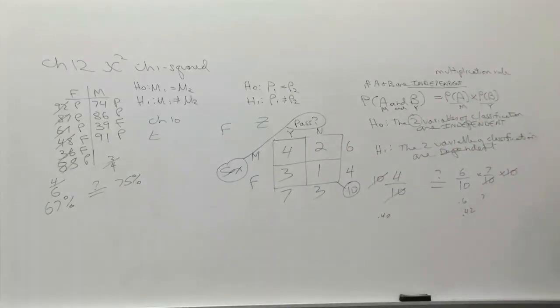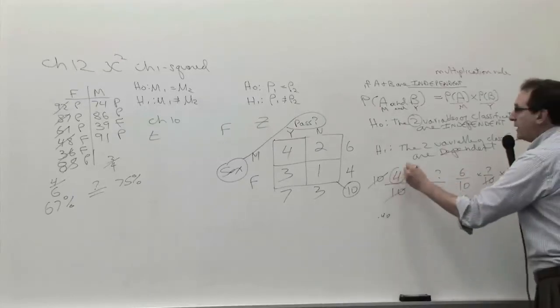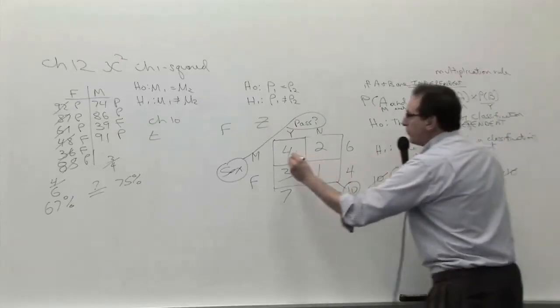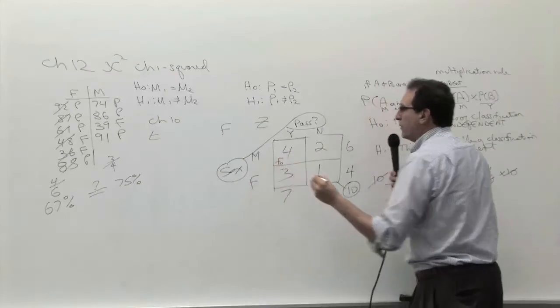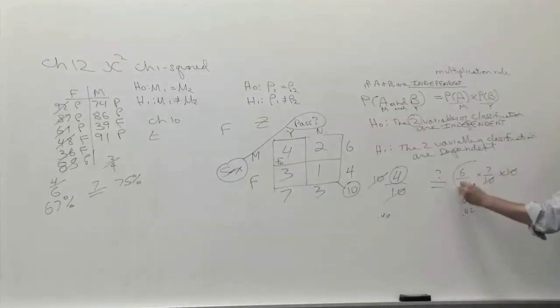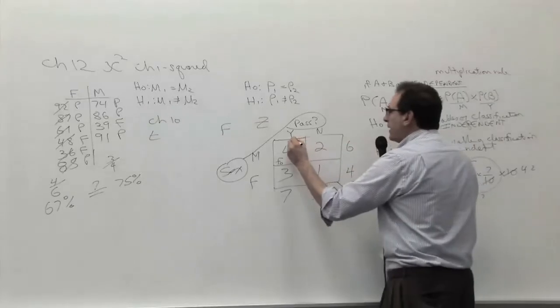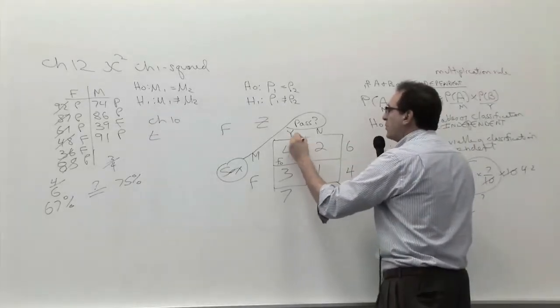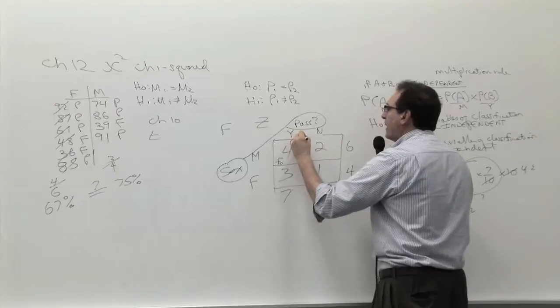Basically the calculation you've got to do is take the number that you actually observed, we call that the frequency that was observed, F_O, and compare it to the frequency that we actually expect. So six times seven over ten is 42 over ten, or 4.2. So this 4.2 is the number that I'm going to put in a circle, and it's called the frequency that we expect.